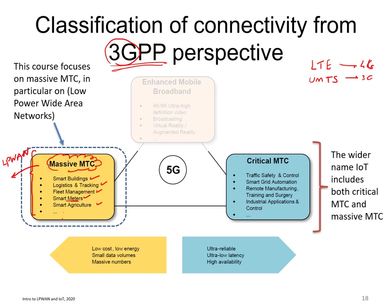According to 3GPP terminology, LPWAN applications are called massive MTC — massive because the number of devices is very large and expected to exceed the human population in certain locations, and MTC because these are machine-type devices communicating to the internet, not humans. Commercially, this is commonly referred to as IoT. LPWAN and massive MTC are the more precise technical terms for what this video covers.